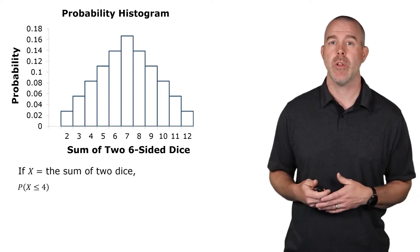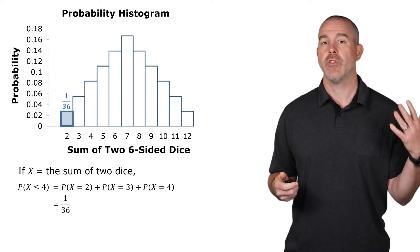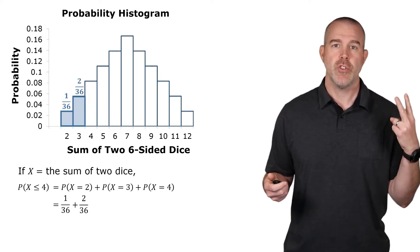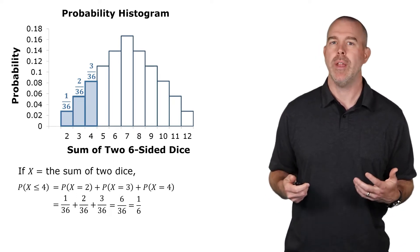Well, that would just be those three probabilities. The probability that it's 2, that's 1 out of 36. 3 is 2 out of 36, and 4 is 3 out of 36. You add those together, you get 1 sixth.